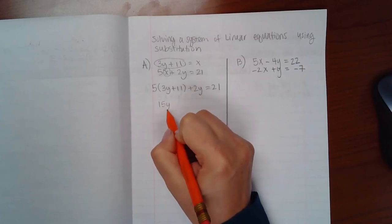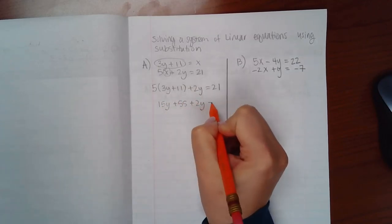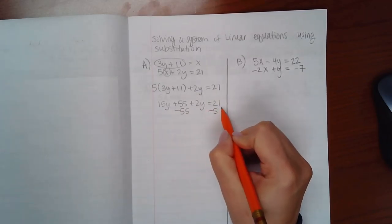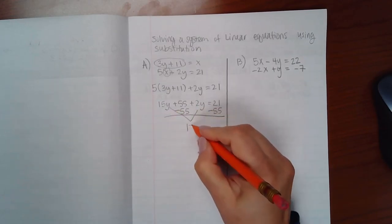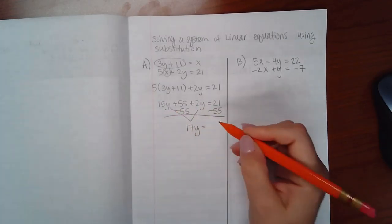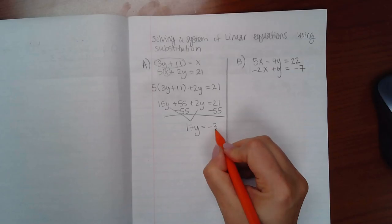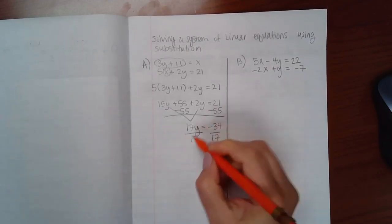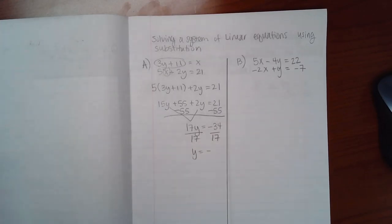I will get 15y plus 55 plus 2y equal to 21. If I minus 55 on both sides, I will get 17y equal to negative 34. And then if I solve for y, I can divide by 17, and I will get that y is negative 2.